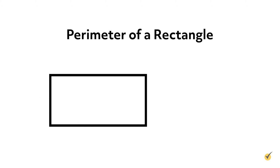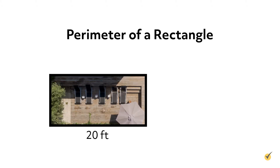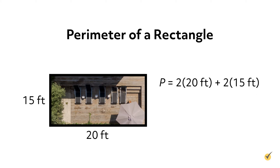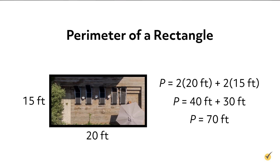For instance, suppose you have a rectangular patio that is 20 feet long by 15 feet wide. 2 times 20 feet is 40 feet and 2 times 15 feet is 30 feet. So we add 40 feet and 30 feet to get a perimeter of 70 feet. This means that we would need to buy 70 feet of fencing to go around the patio.